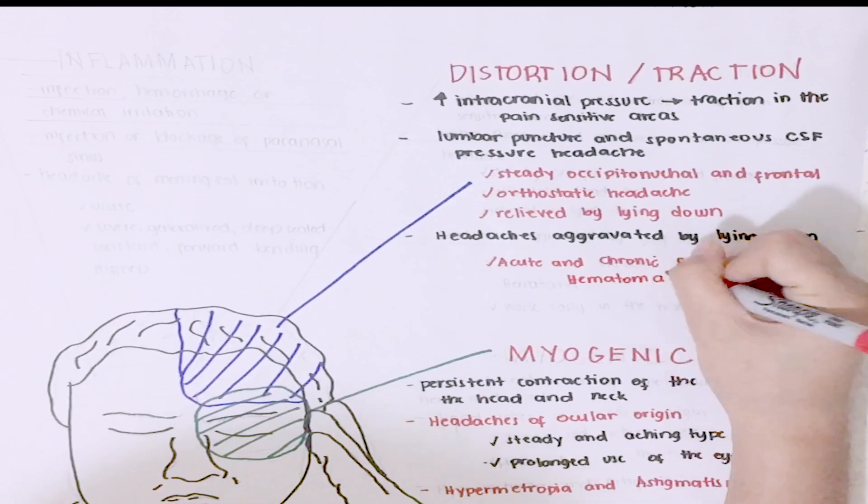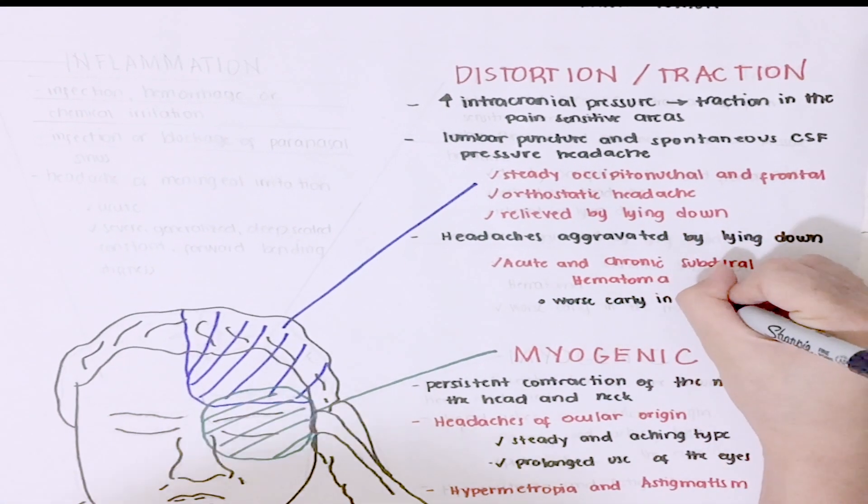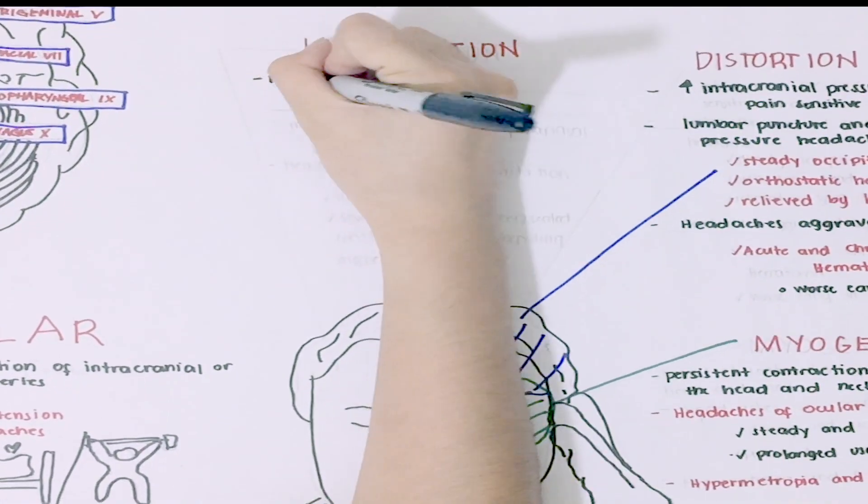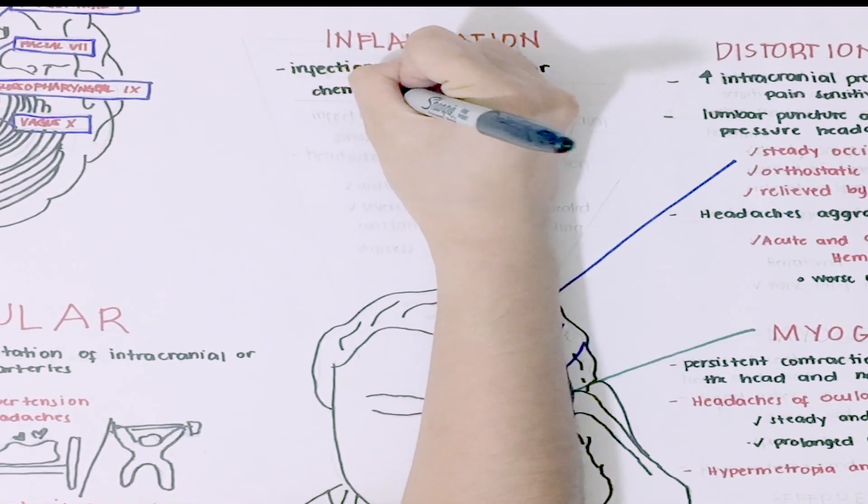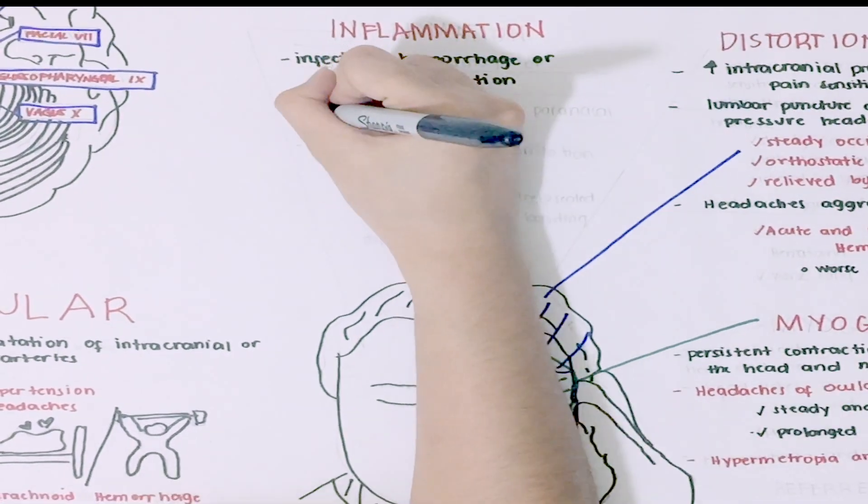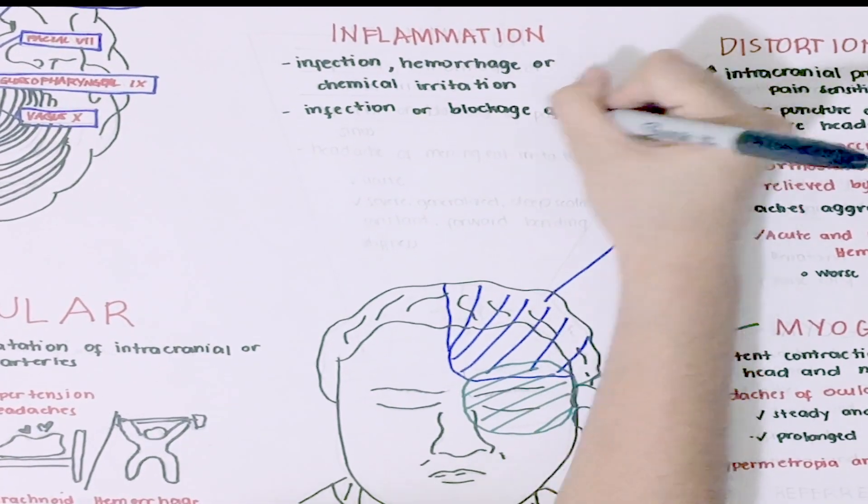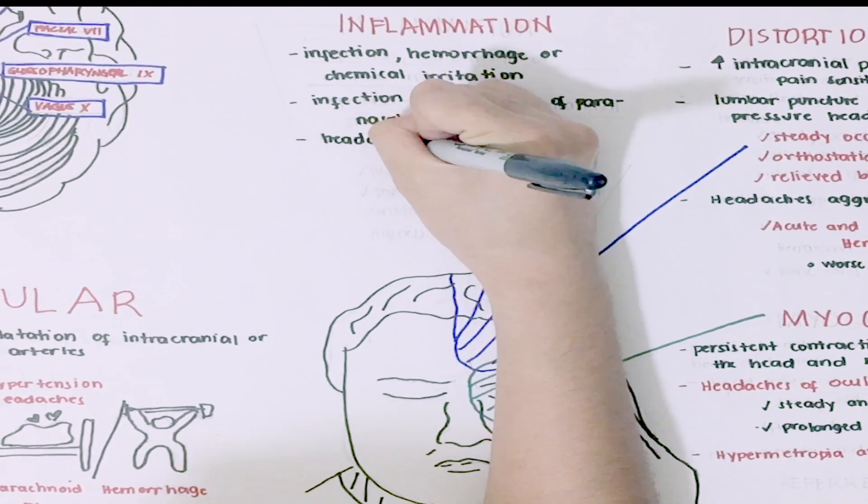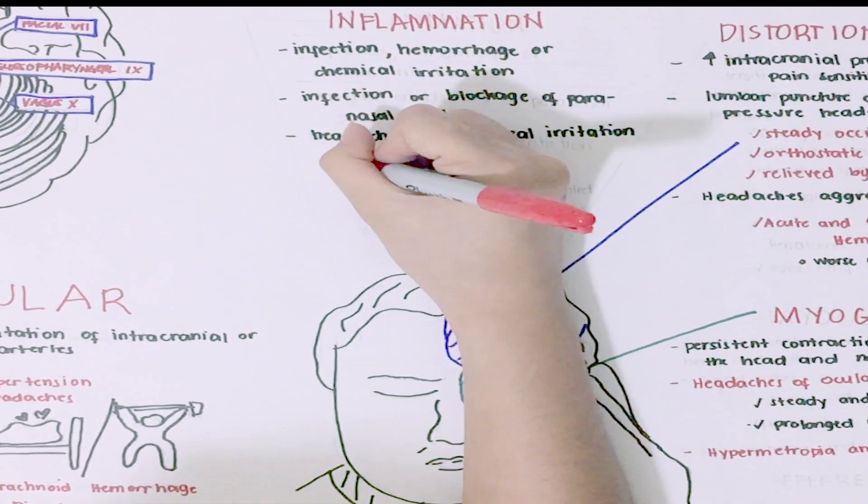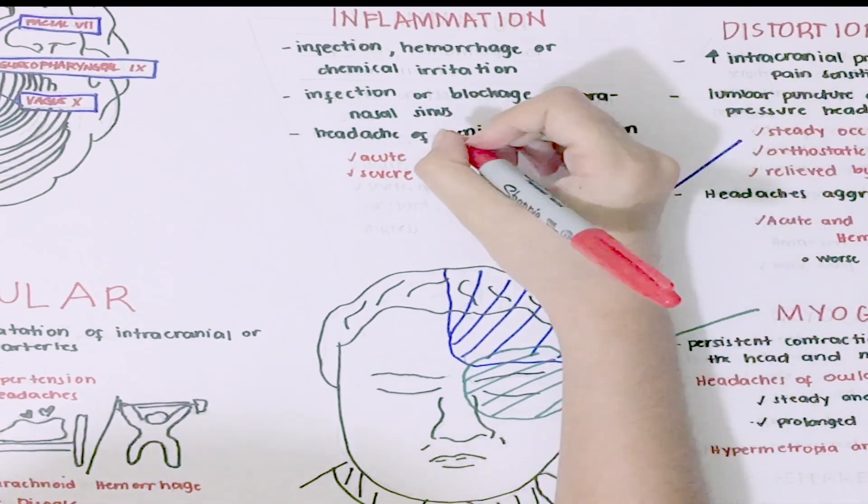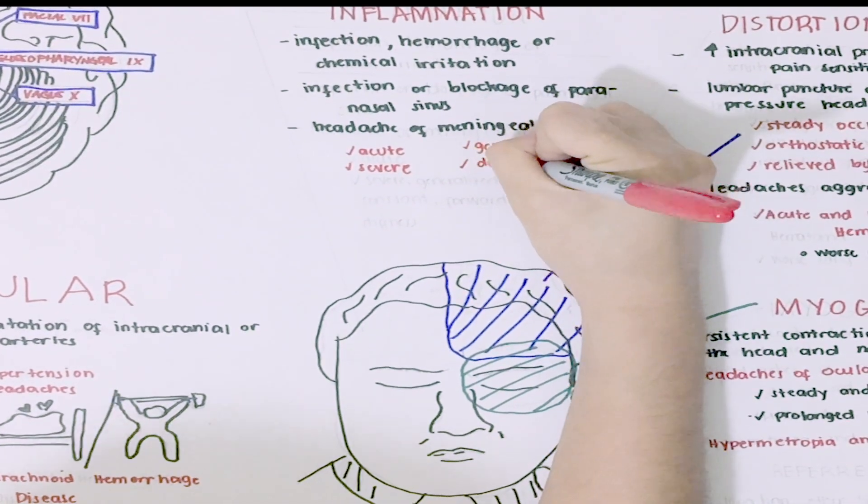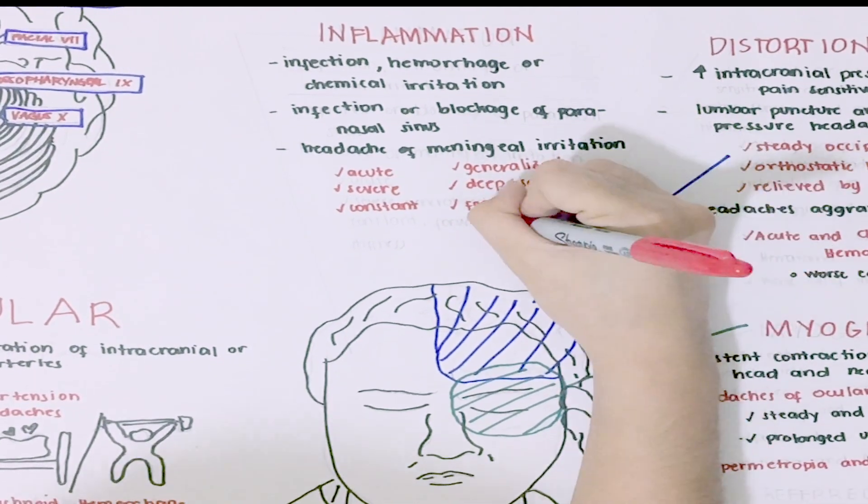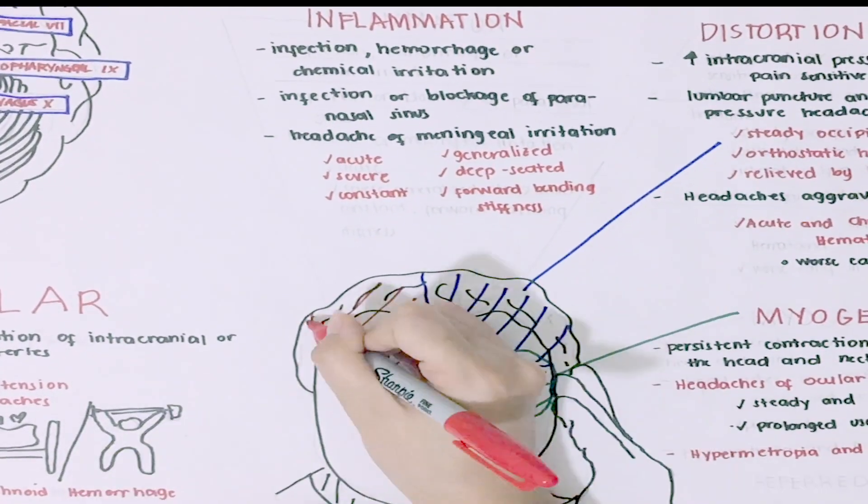Inflammation. This can be caused by infection, hemorrhage, or chemical irritation. Examples are infection or blockage of paranasal sinuses. On the other hand, headache of meningeal irritation have an acute onset. They are characterized as severe, generalized, deep-seated, constant, with stiffness of the neck.